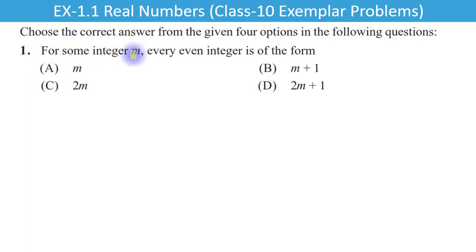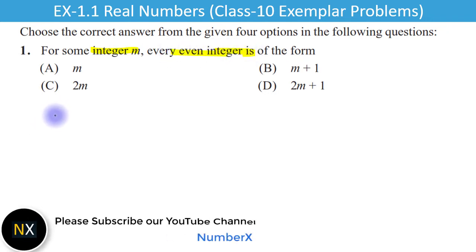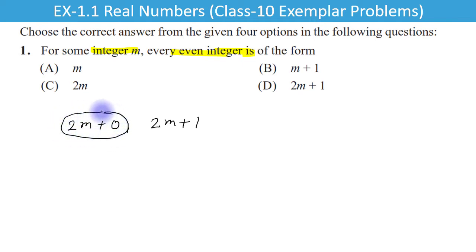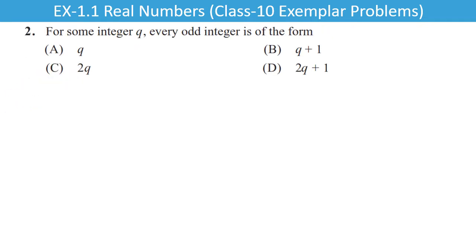Question 1: For some integer m, every even integer is of the form. Kisi bhi integer ko 2 se divide kiya jaye to uska form hota hai 2m plus 0 ya 2m plus 1. Even integer ki property hoti hai ki wo 2 se completely divide hota hai. Yahan pe 2m plus 0, that is 2m — so C is the right answer.